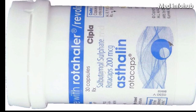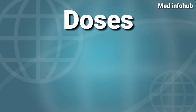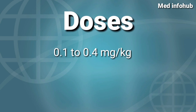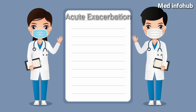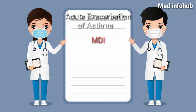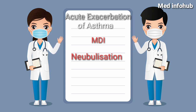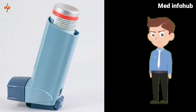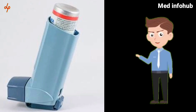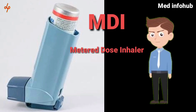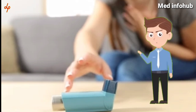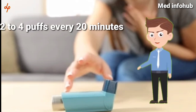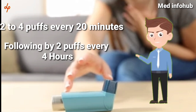Let's see the doses of Salbutamol. The dose is 0.1 to 0.4 mg per kg per dose every 8 hours. For patients with acute exacerbations of asthma, MDI and nebulisation can be given; injection can also be given but is the least preferable route. The best route is MDI — 2 to 4 puffs every 20 minutes, followed by 2 puffs every 4 hours.